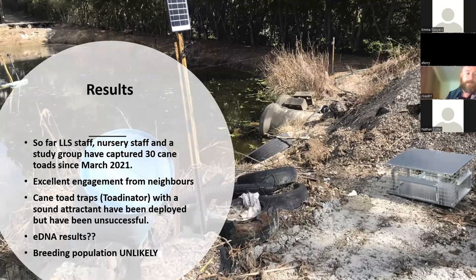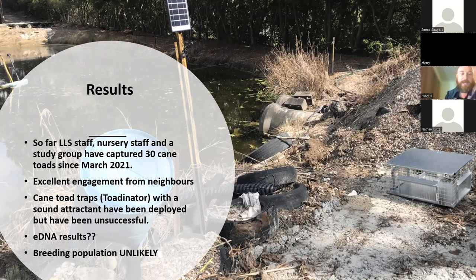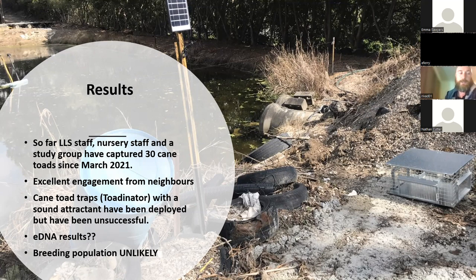Results so far: LLS and nursery staff have captured 30 cane toads from this one nursery. The cane toad trap uses a male call to attract females — they go in through a one-way flap and can't get back out. We've had excellent engagement from neighbours at Kenthurst, who have found and reported toads themselves. eDNA results are still pending. A breeding population is unlikely — we're generally finding immature toads coming down from Queensland. When we start seeing big toads and then lots of little ones, that's when alarm bells ring. For now, we've caught generally mixed sizes of immature, not-yet-breeding toads.